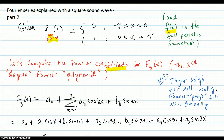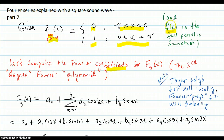The Fourier series explained with a square sound wave, part two. Here's your one period, f, notated as f sub one period. It's zero on this interval and one on this interval. And f of x is the full periodic function where these snippets have been pasted next to each other.